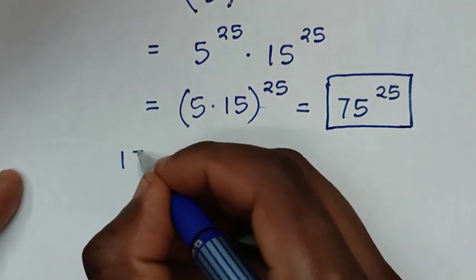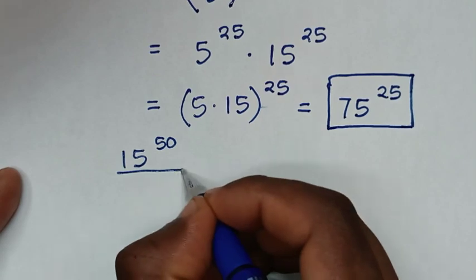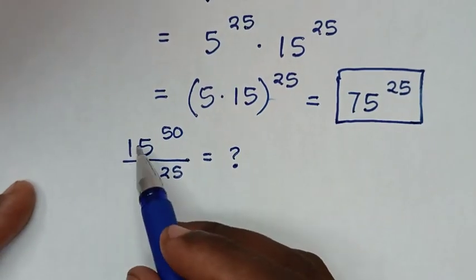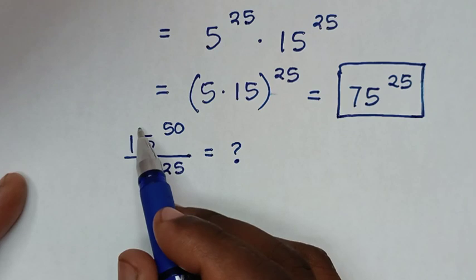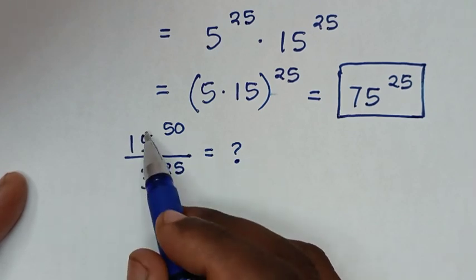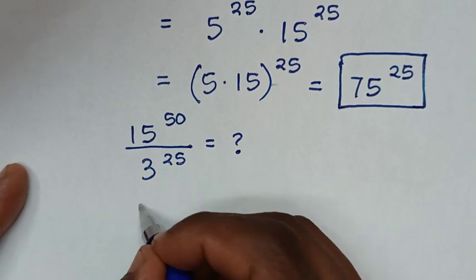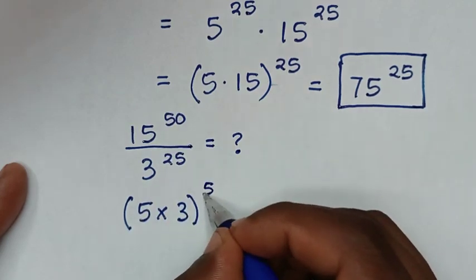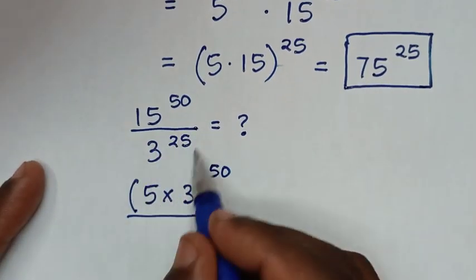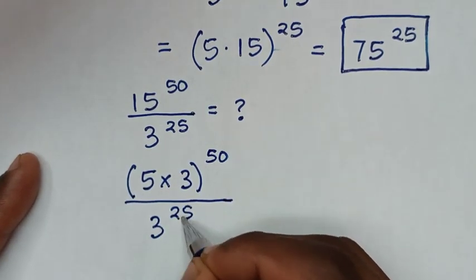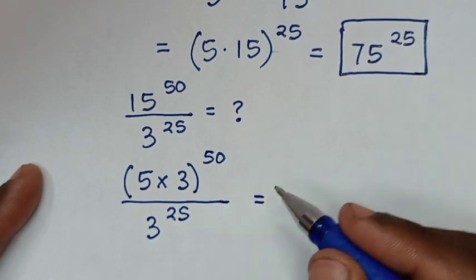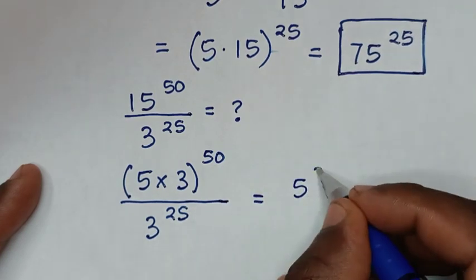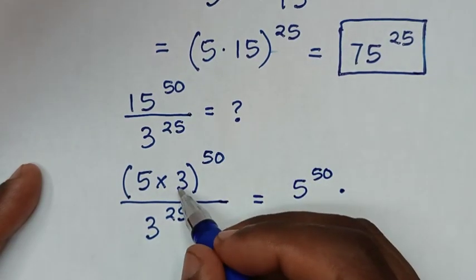Or, to solve using another method, from our problem which was 15 power of 50 over 3 power of 25: in the first step, we rewrite the base of 15 to have a common base of 3. So 15 is the same as 5 times 3, giving us (5 times 3) bracket power of 50, over the exponent 3 power of 25. Taking the power of 50 inside the bracket gives 5 power of 50 times 3 power of 50.